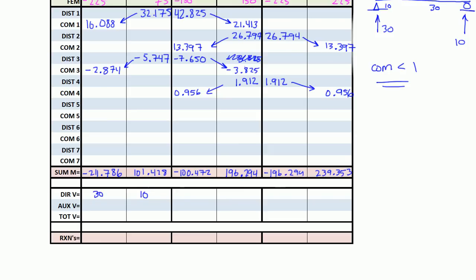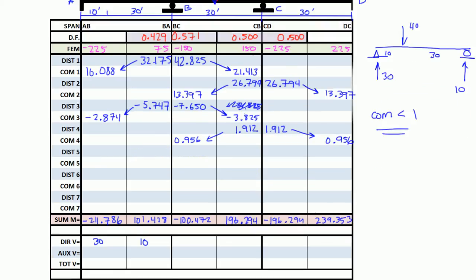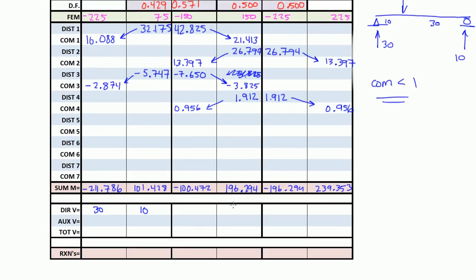For span BC, you have 2 kips per foot times 30 feet, so the total load going down is 2 times 30, which is 60 kips. Since the load is uniform, on the left side the shear would be 30 and on the right side it should also be 30.